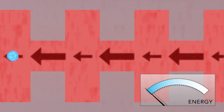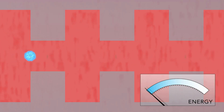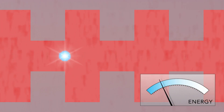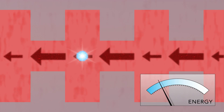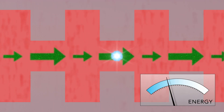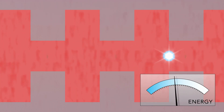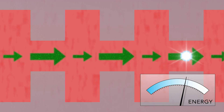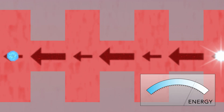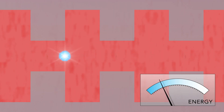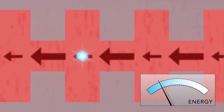Electrons traveling through the patterned channel now receive a big energy boost from the electric fields between the ridges, and lose only a little energy as they pass through the smaller gap fields. The net result is a significant energy gain for those electrons that are perfectly timed with the laser light waves.